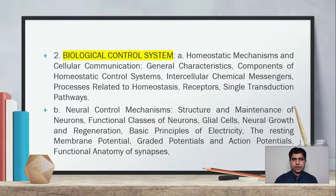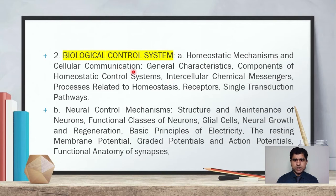The second major chapter will be biological control systems. Subheading A will be homeostatic mechanisms and cellular communication, covering general characteristics, components of homeostatic control systems, intercellular chemical messengers, processes related to homeostasis, receptors, and signal transduction pathways.